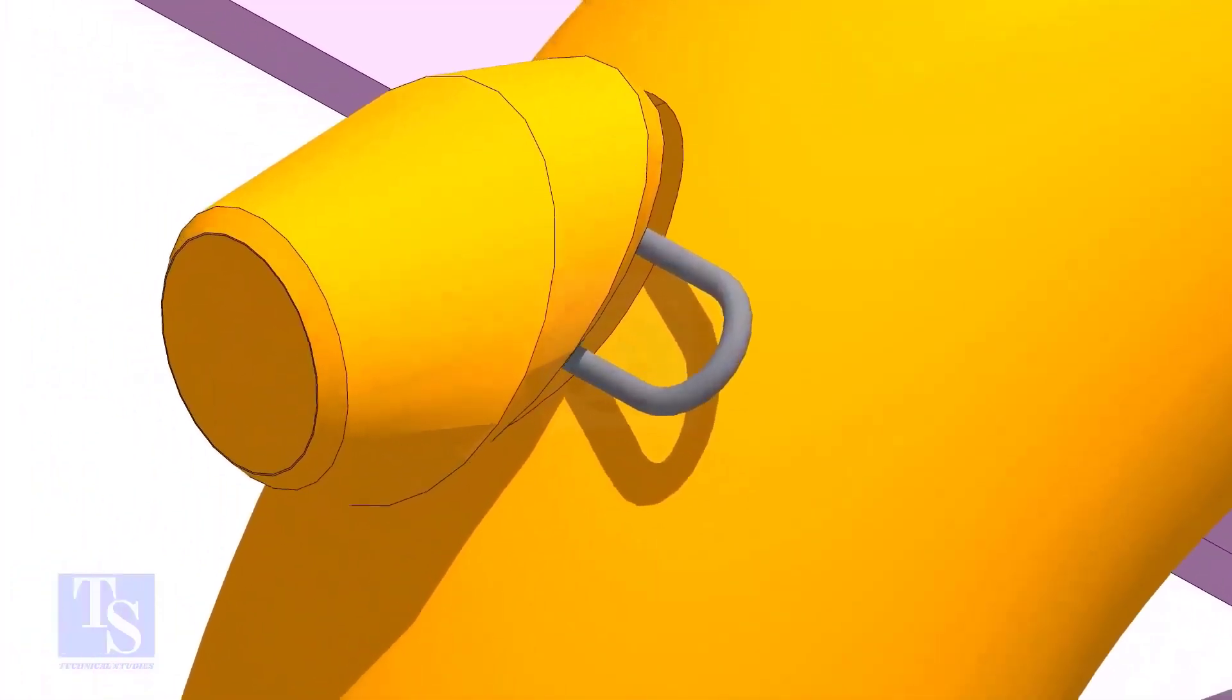Tack weld at one side of the elbowlet, just to hold the elbowlet in its position. Don't make too big or too small tacks.